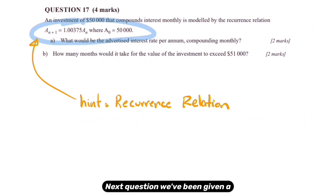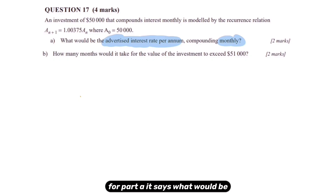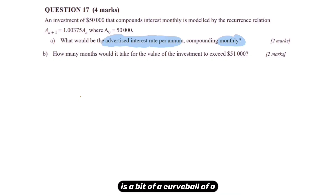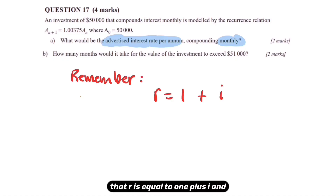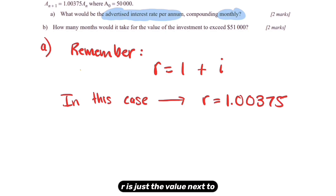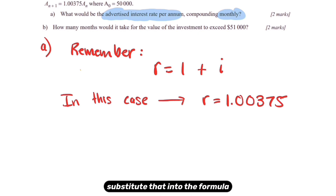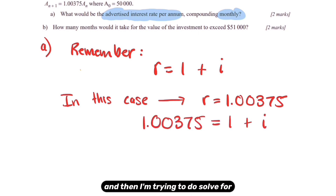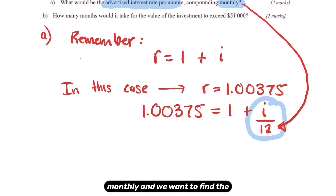The next question gives us a recurrence relation — the ultimate hint that we'll use the recurrence relation formula. For part A, it asks for the advertised interest rate per annum compounding monthly. Remember that R equals one plus I, and in this case R is just the value next to A_N, which is 1.00375. I substitute that into the formula and solve for I. It's a bit of a curveball because it's compounding monthly but we want the advertised rate per annum.